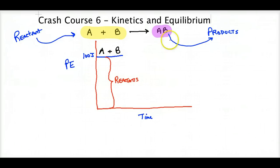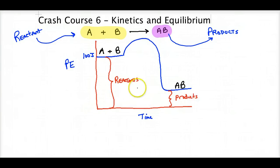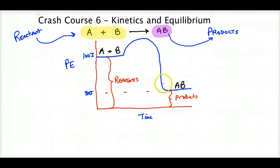The reaction proceeds along a certain pathway of potential energy. At the end of the reaction, we have the potential energy of the products — A and B together have less energy than the reactants. The products have less energy; we can call that line 30 joules. So we started with 100 joules and after the reaction went to completion, we have 30 joules.